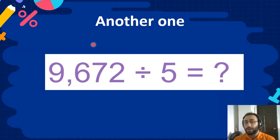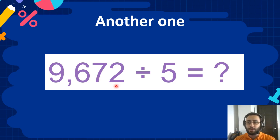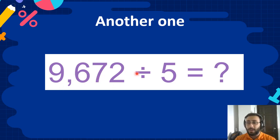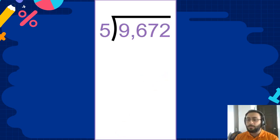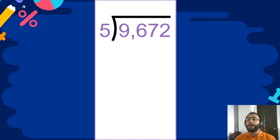Let's do another one. 9,672. Repeat after me: 9,672 divided by 5 equals — I don't know, let's write it in long division. Let's do it together. How many 5's fit into 9? 1. 1 times 5 equals 5.